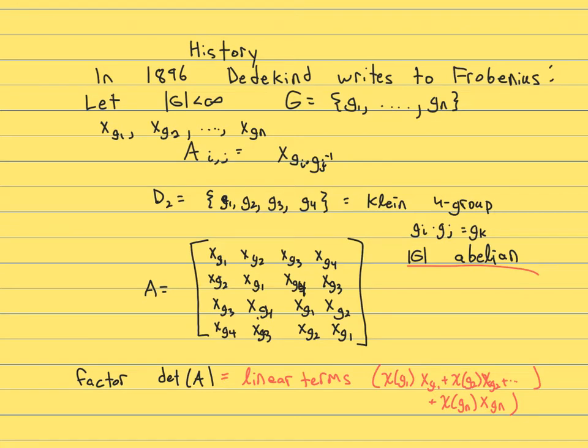There ended up being exactly n factors in this problem. And each one corresponded to a unique homomorphism from your group to the non-zero complex numbers under multiplication. And he was able to prove there were exactly n such things, and each corresponded to one of these factors.